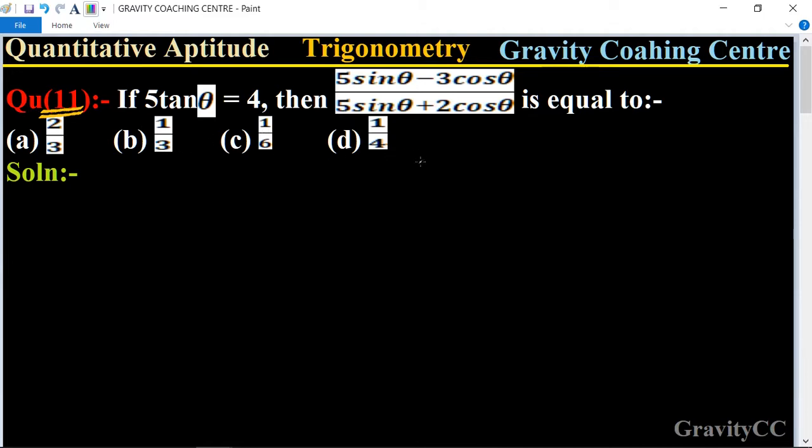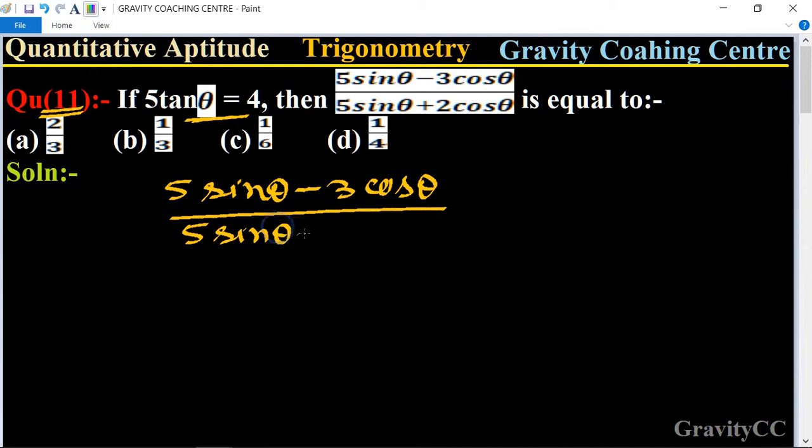So here given that 5 tan θ is equal to 4, and find (5 sin θ - 3 cos θ) / (5 sin θ + 2 cos θ) is what. So first way, dividing numerator and denominator by cos θ.